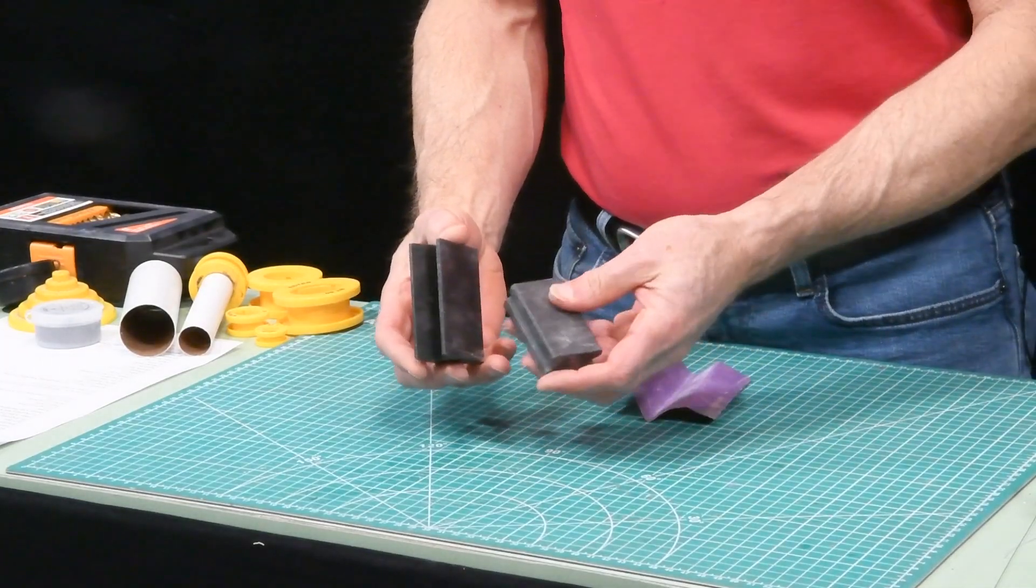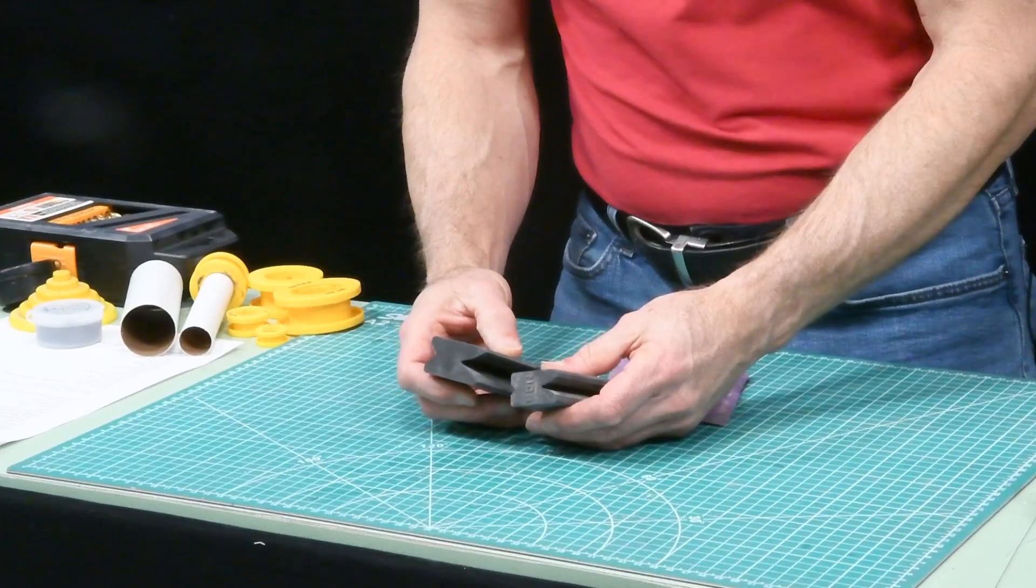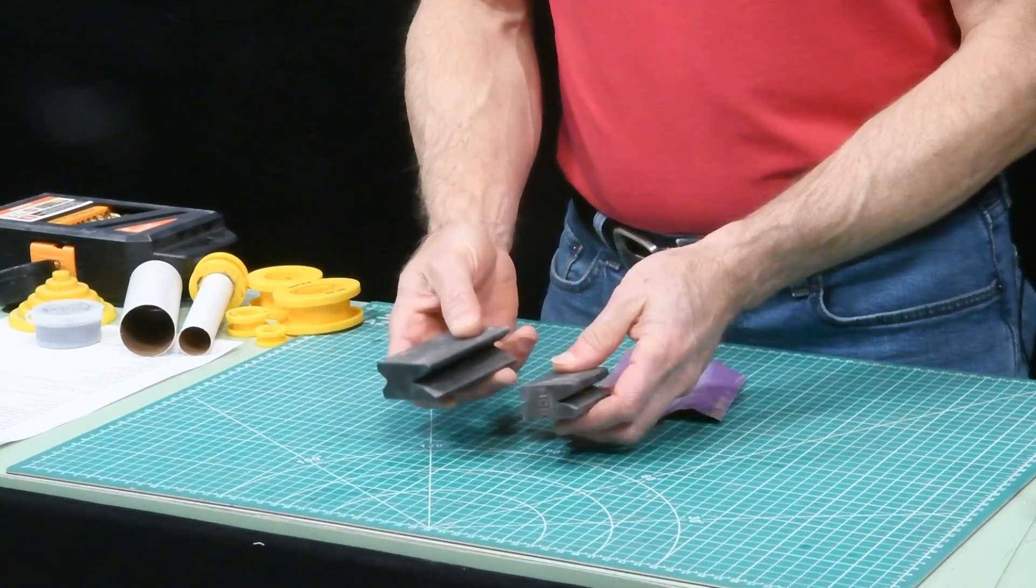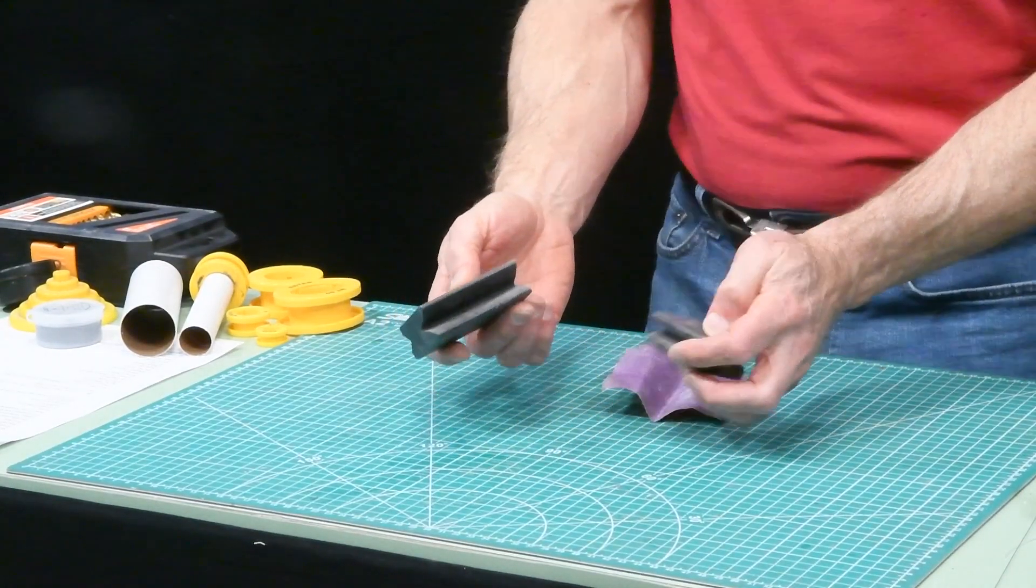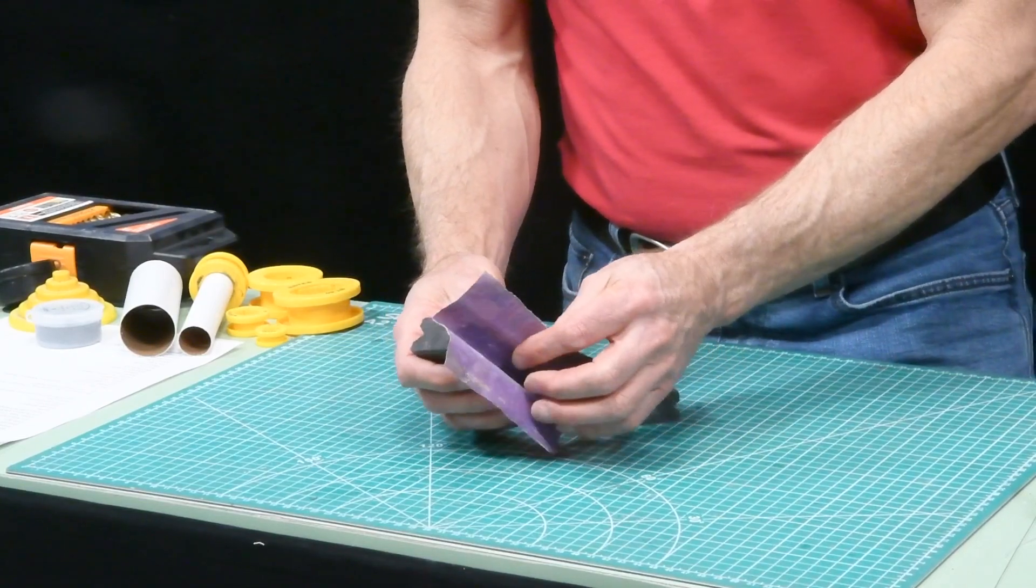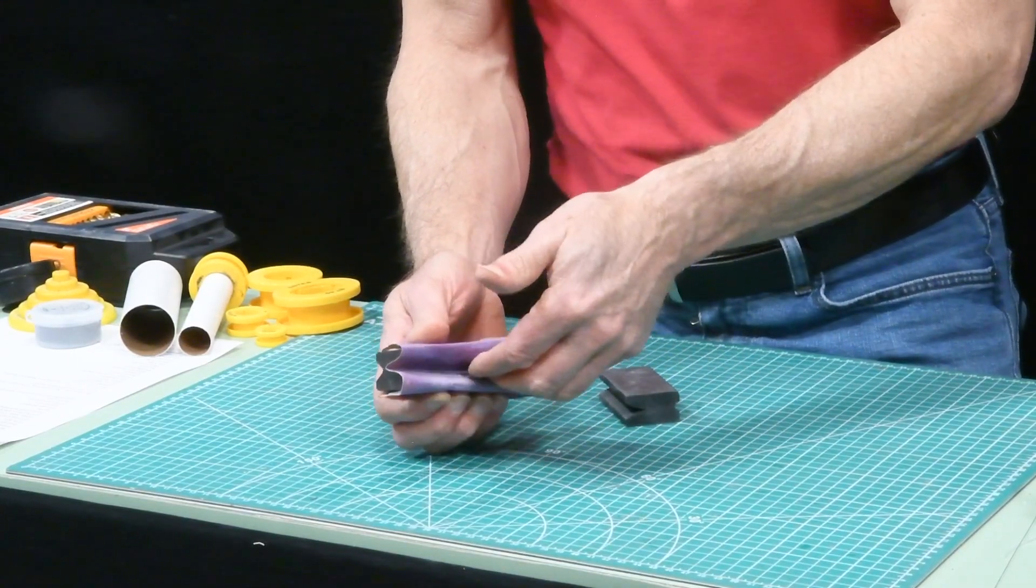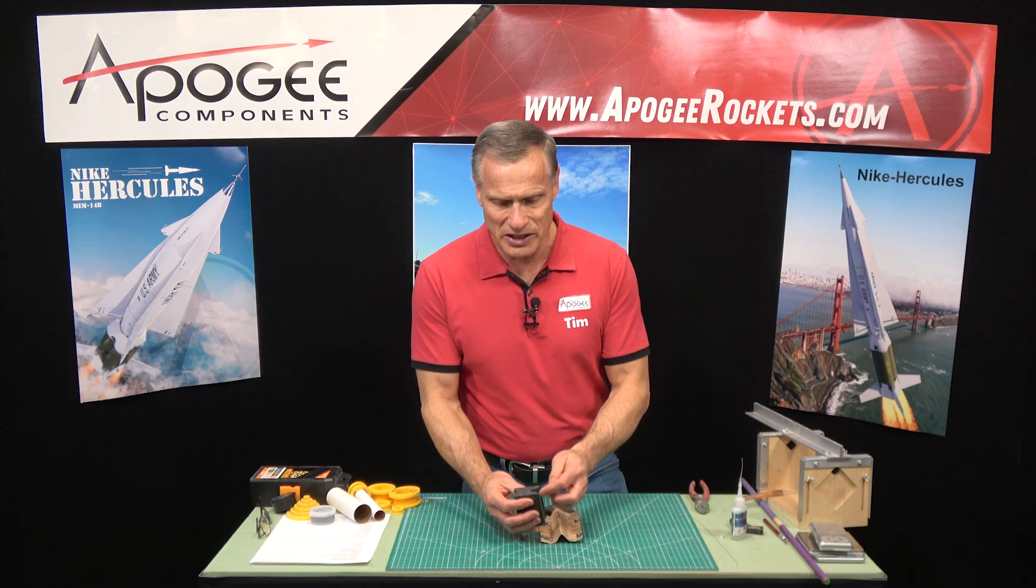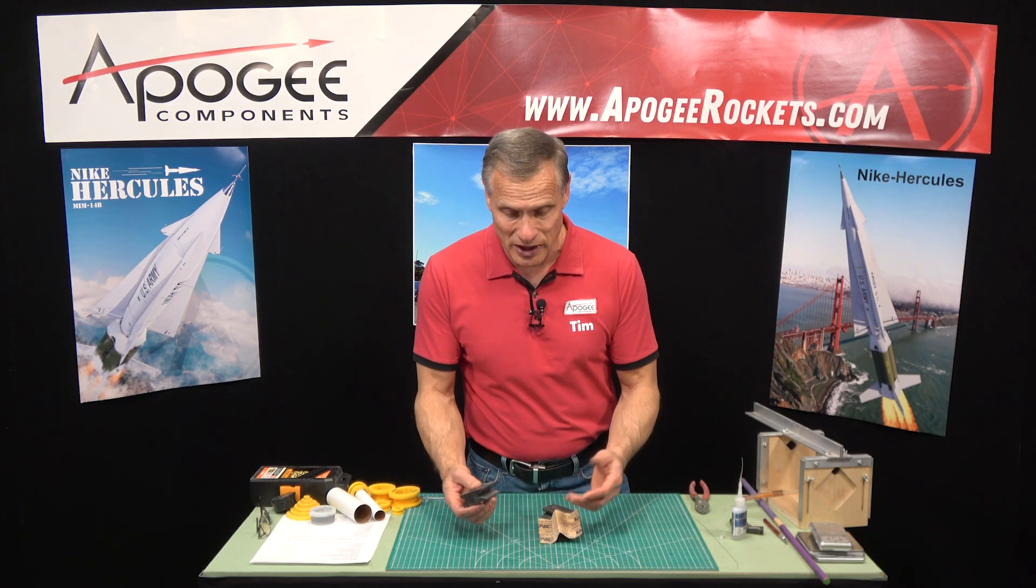Also in skill level 3 some of the unique tools that you might use these are airfoil assistance. They're from North Coast Rocketry and what you do is you put sandpaper in the little gaps like that and then you can stick your fins in there and you can round them off and it gives you a nice even surface on both sides.